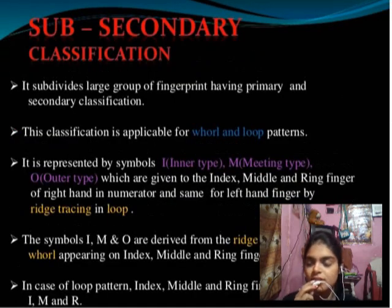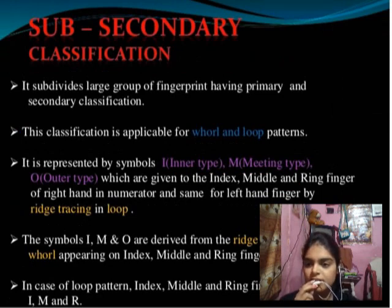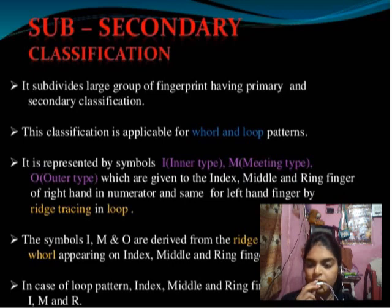Then we discuss about Sub-Secondary Classification. It subdivides large groups of fingerprints having primary and secondary classification. This classification is applicable for whorl and loop patterns only. It consists of two methods for classification.